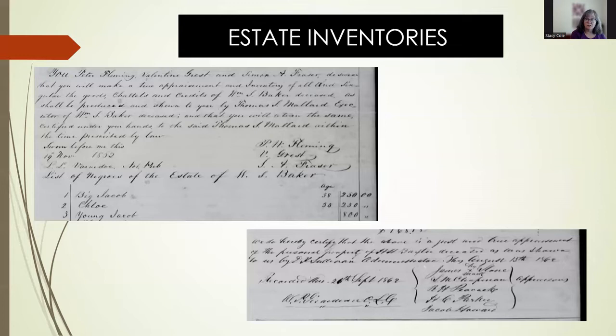What happened to the estate in the meantime if it wasn't dispersed? In the case of enslaved people, they would often be kept on the plantation under the management of an overseer who would often be a relative of the deceased. A note from Liberty County that might apply elsewhere: often I see the date that the appraisers were sworn in and the date the inventory was recorded in court, without anything explicitly saying what day the inventory was actually performed.